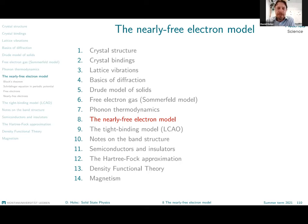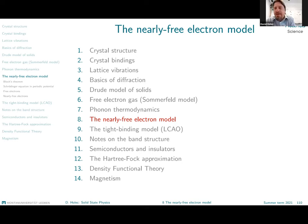The free electron gas as we described it was characterized by the fact that there were no interactions between electrons, and no interactions between the electrons and atoms. This is why we call them free electrons — they are not bound by any interaction. We know that electrons in real materials are interacting with each other, with the lattice, and with the atoms, and so we need to take this into account.